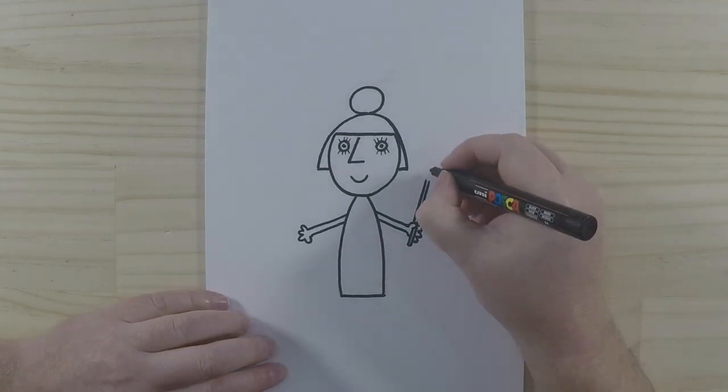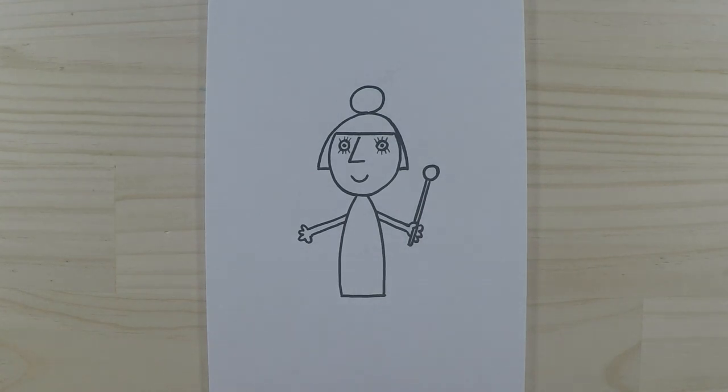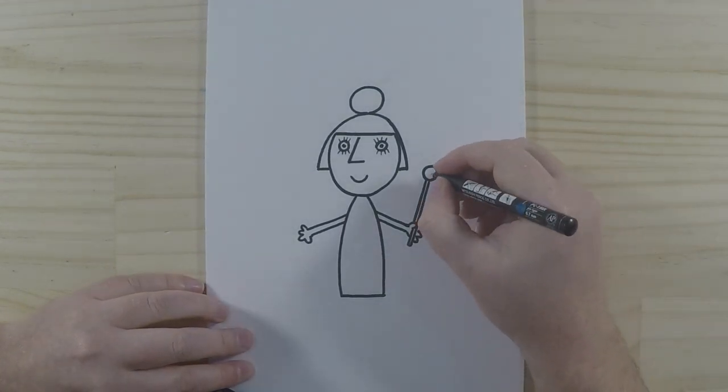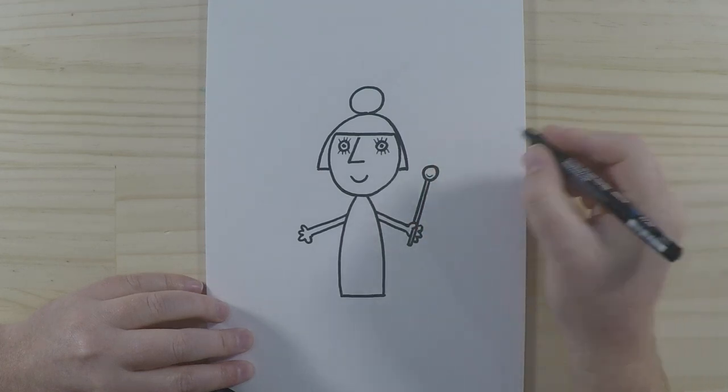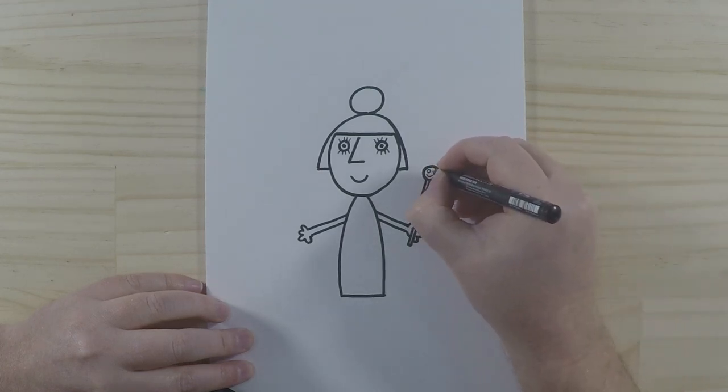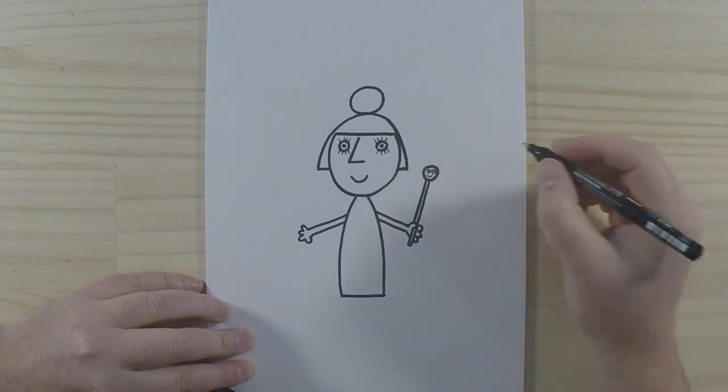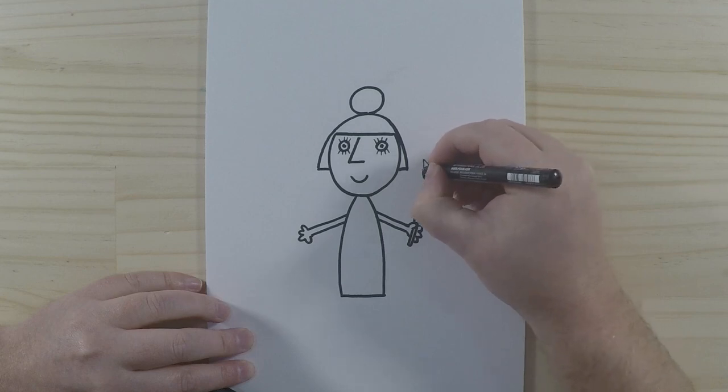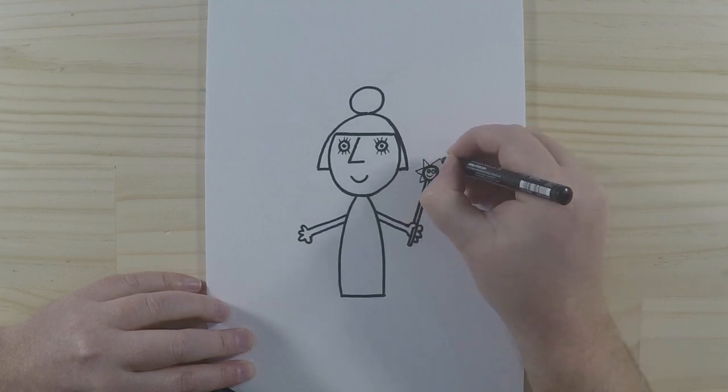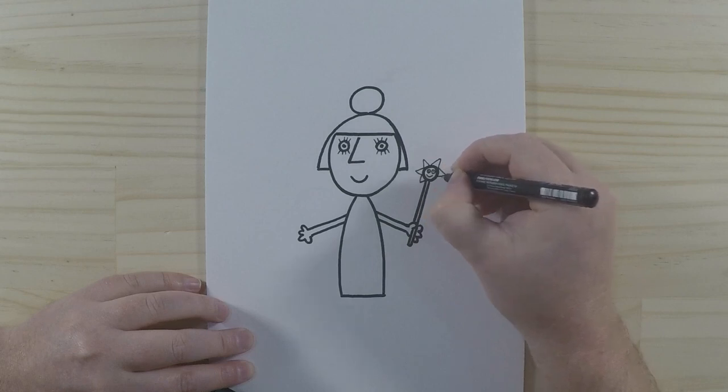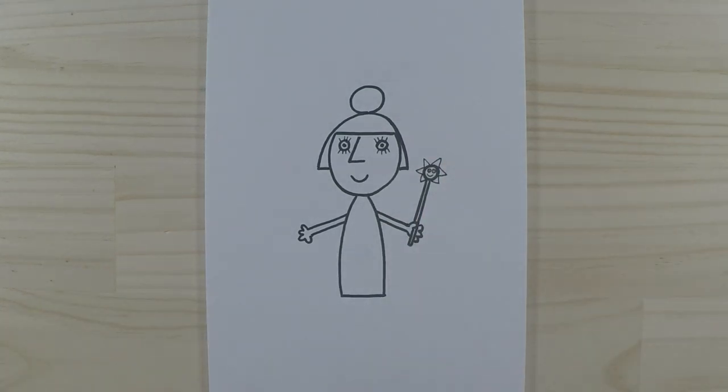Alright, so let's draw her wand. We'll draw a nice circle shape like that. And I'm just going to get a small pen because there's actually a little face in here. So we'll draw a little smile and two eyes in there as well. And then the rest of it is actually made up of triangles, so it kind of looks like a bit of a star, just like that.